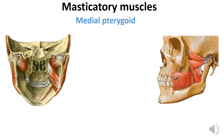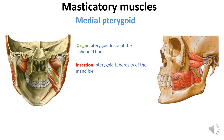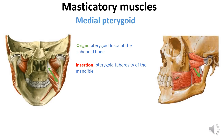The medial pterygoid muscle is located on the medial surface of the mandible. It originates from the pterygoid fossa of the sphenoid bone and inserts into the pterygoid tuberosity of the mandible. The medial pterygoid elevates the mandible, closes the jaw, and helps the lateral pterygoids in moving the jaw from side to side.